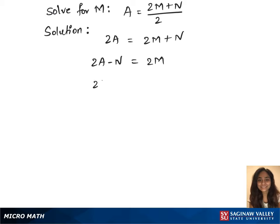So let's divide 2 on both sides, which gives us 2a minus n over 2 equals to m. We will write this equation the other way, which is m equals to 2a minus n over 2. So this is our solution — we have solved for m.